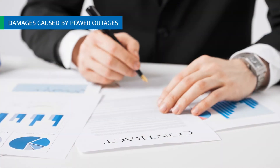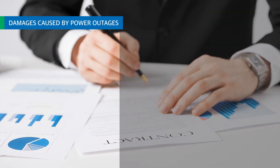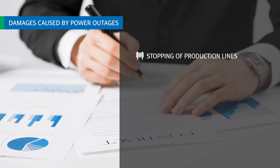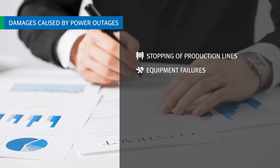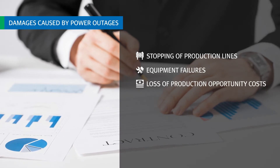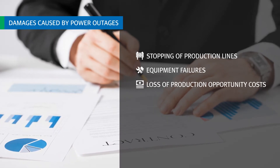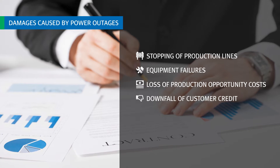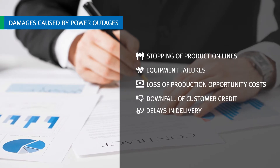Power outages can cause various damages to companies, such as stopping of the production line, equipment failure, loss of production opportunity cost, and downfall of customer credit due to delivery delays.